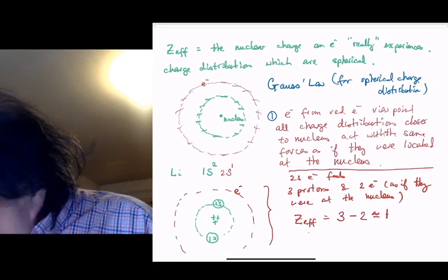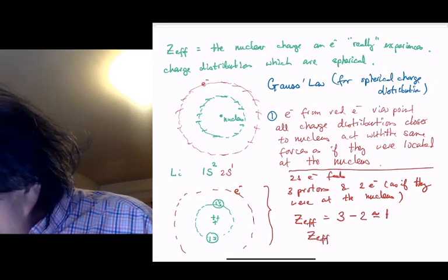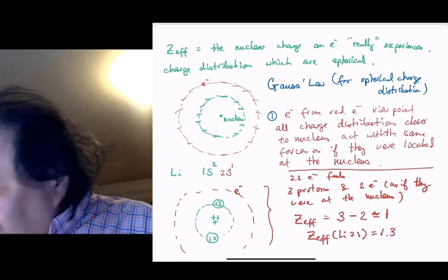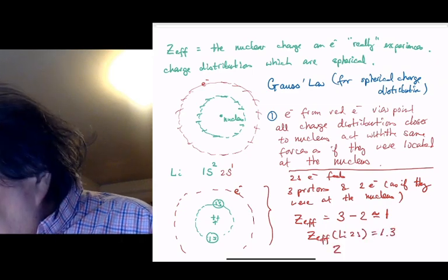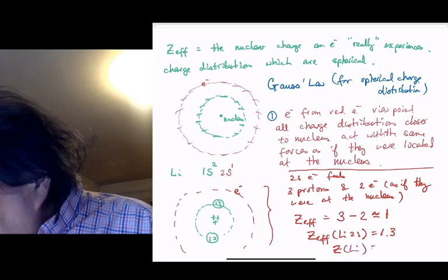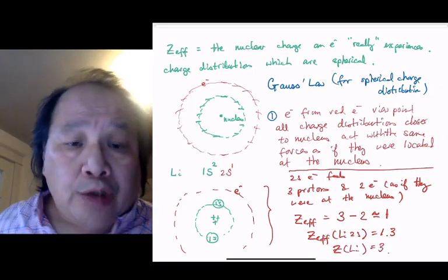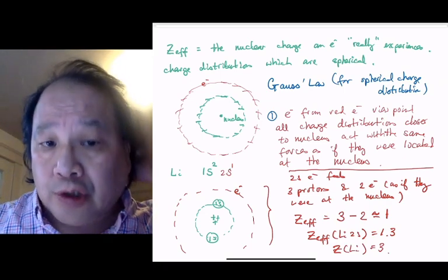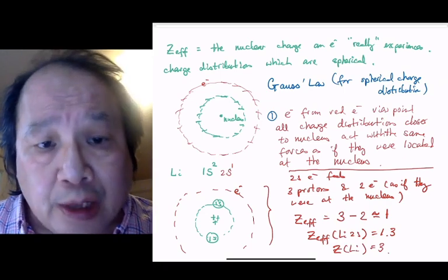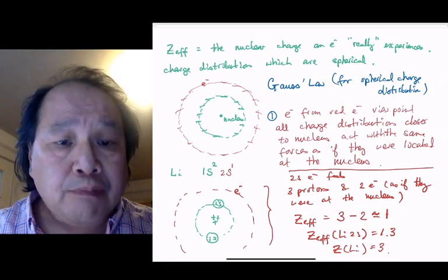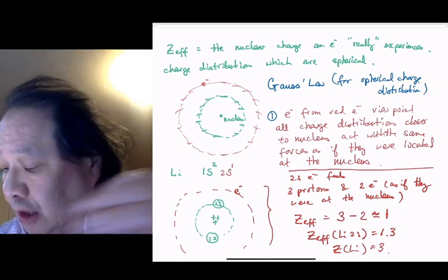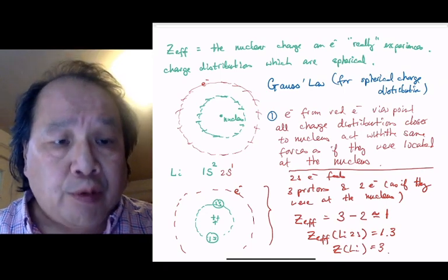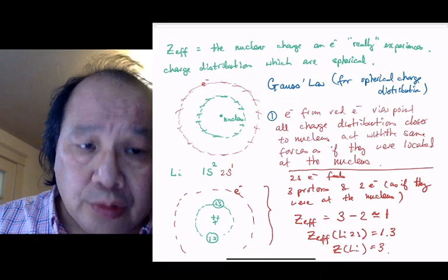The real Z-effective for lithium 2s is 1.3, while Z for lithium is 3. So while lithium has 3 protons, the effective nuclear charge that the 2s electron feels is attenuated because the 1s electrons are acting, from the point of view of forces, as if they are at the nucleus.